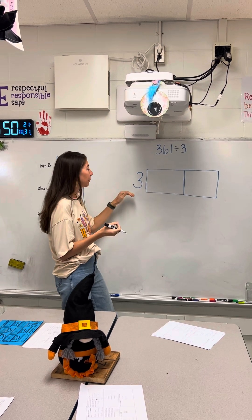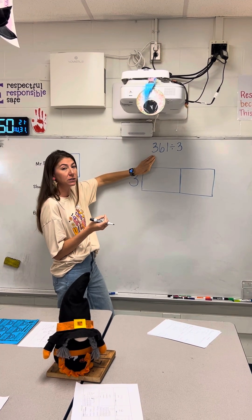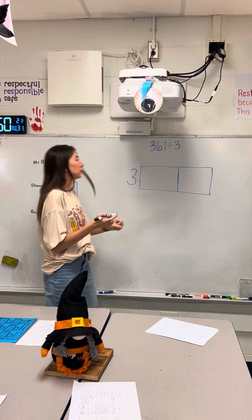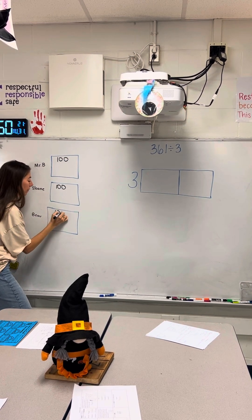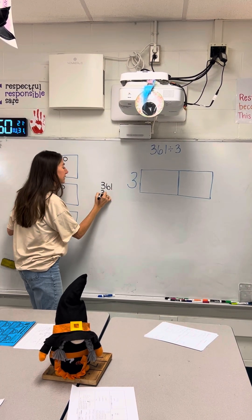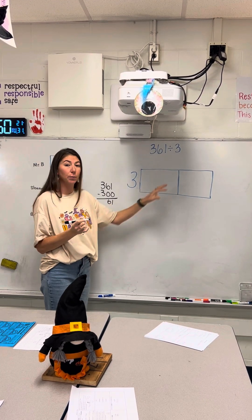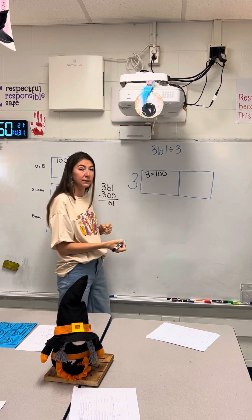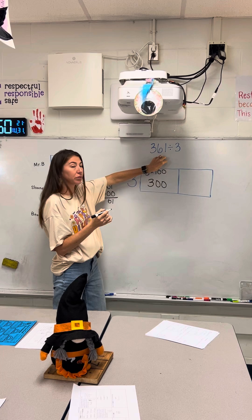First we want to ask ourselves how many times three can go into the hundreds place. Three can go into that hundreds place — I know I can take out three one-hundreds. So if I take out three one-hundreds from 361, that leaves me with 61. How that's represented over here in the area model is I have three one-hundreds, which equals three hundred — that's what I'm taking out of 361.